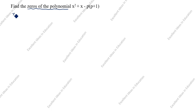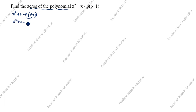What is given: x² + x - p(p + 1). We multiply inside: x² + x - p² - p. Now rearrange: x² - p² + x - p.